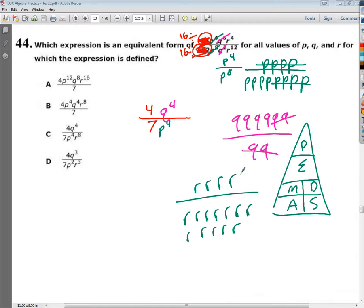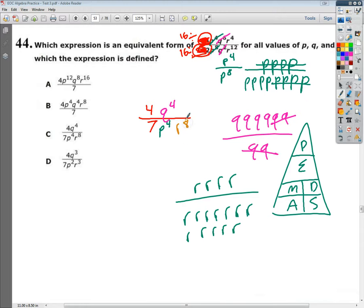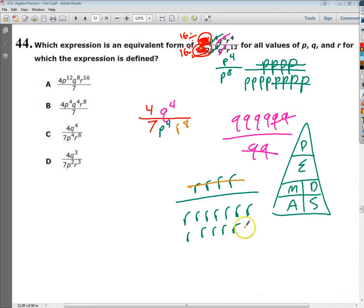Again, like I said, you have to subtract 12 minus 4. That's going to give you R to the 8th. Well, that's going to be on the bottom because if you took away the 4 R's from the bottom, you're still going to be left with 8 R's.